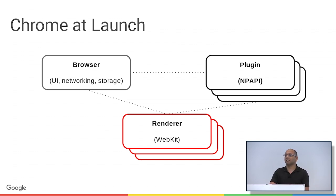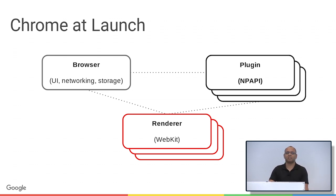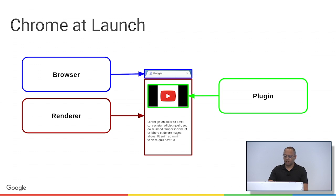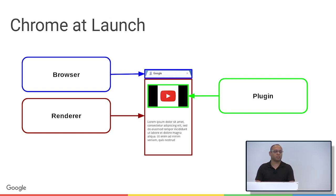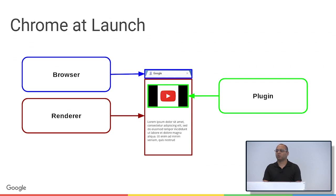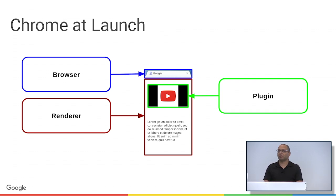There were also plugins that weren't under our control, so we still had to run multiple processes for those, unsandboxed. Looking at our multi-process architecture differently — which parts or processes draw which parts of the UI — the tab strip at the top is drawn by the browser process, the main process. The HTML is rendered by the render processes. And the plugin processes were used to draw things like Flash video.